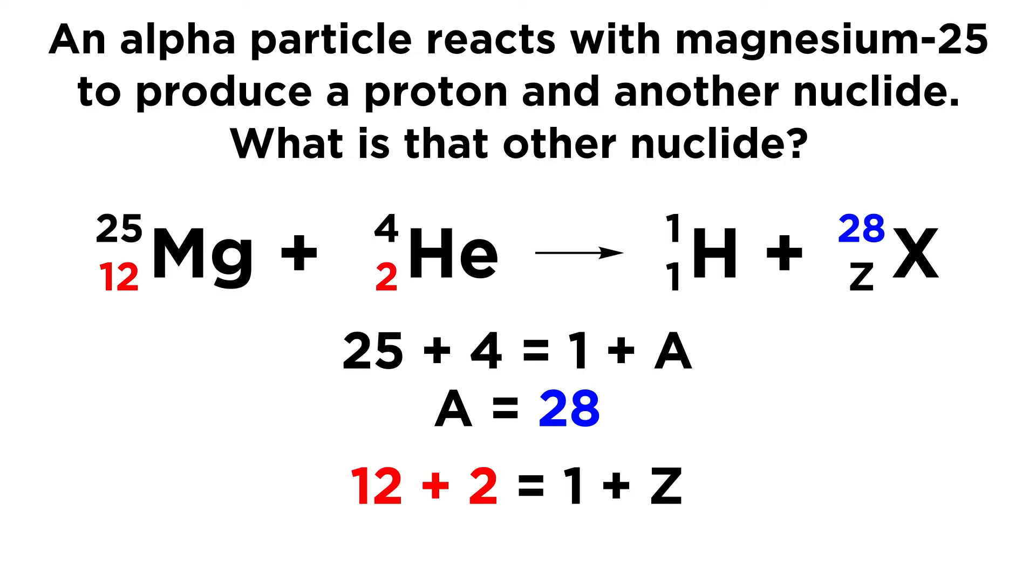Now let's do the same for atomic number. On the left we have 12 from magnesium and 2 from helium, so 12 plus 2 must be equal to 1 plus Z. And if we do the arithmetic, Z must equal 13.